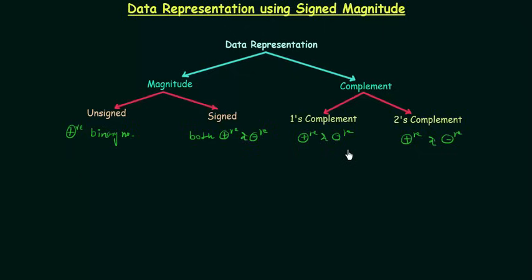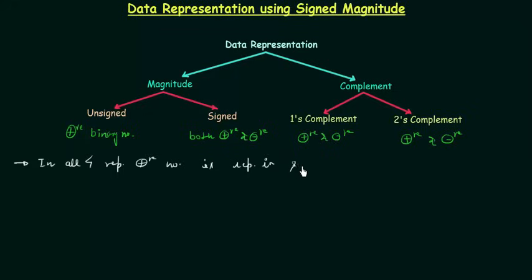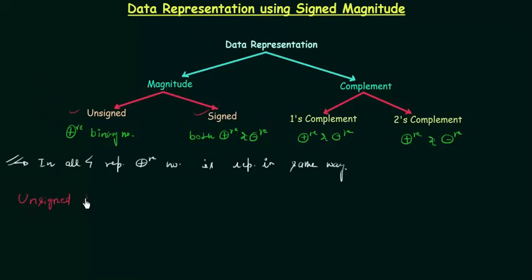In all four representations, positive numbers are represented in the same way. This is a very important point, and thus we have to focus only on negative number representation. In this lecture we will focus on unsigned and signed magnitude representation, and in the next lecture we will study one's complement. So let's start with unsigned magnitude representation.